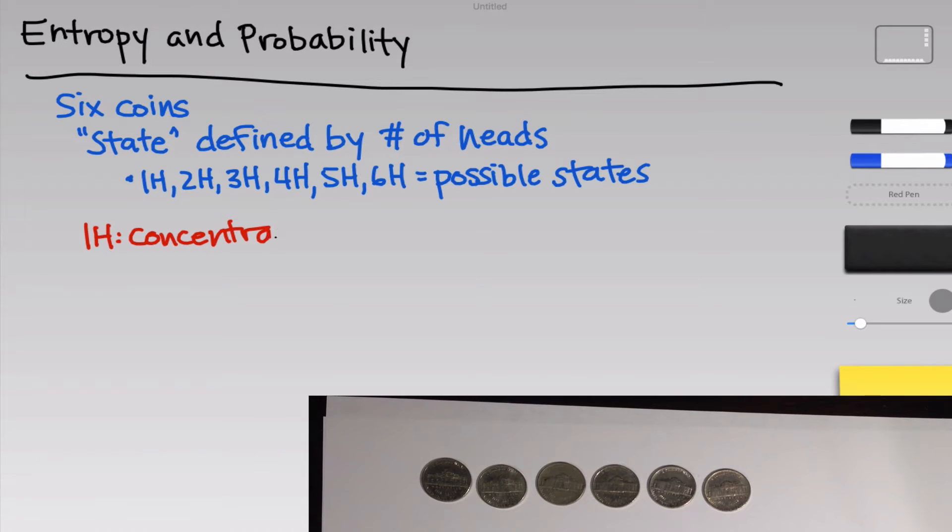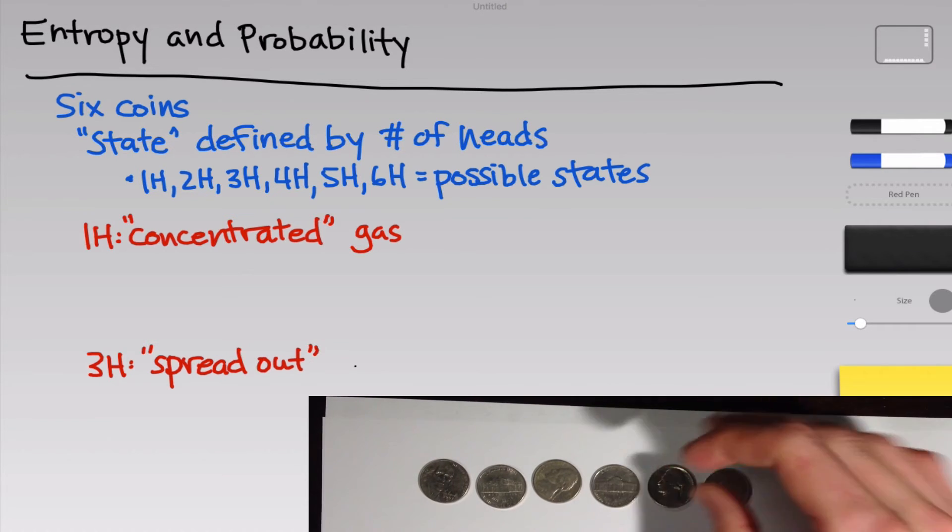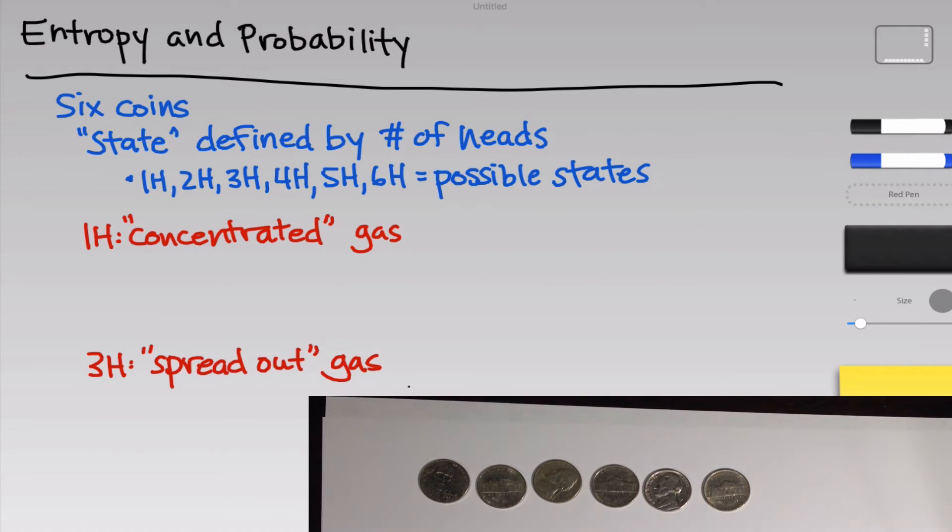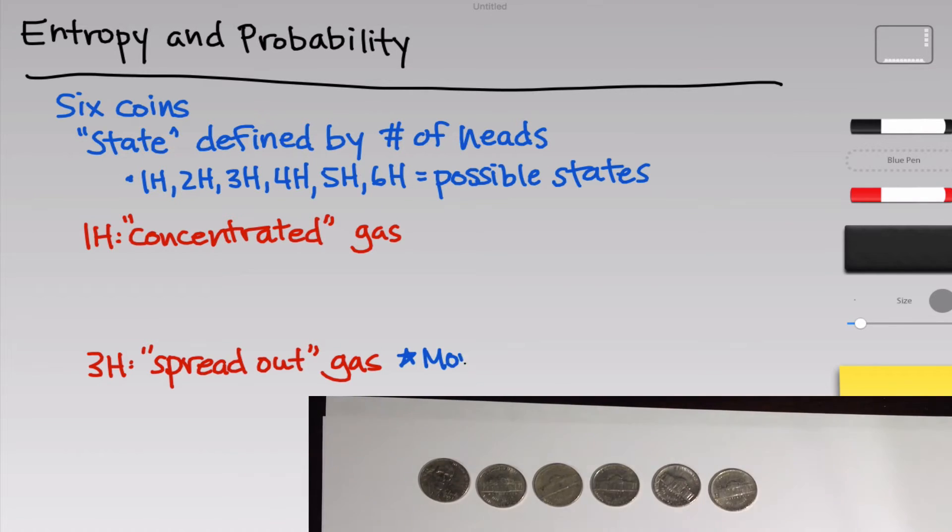Intuitively, think of the one head state as the concentrated gas state that we just looked at. There's only one head in the six nickels, so we have a relatively concentrated number of heads. Think of the three head state as the more spread out gas state. The punchline is that the three head state where three of the coins are heads and the other three are tails is more likely to occur than the one head state.